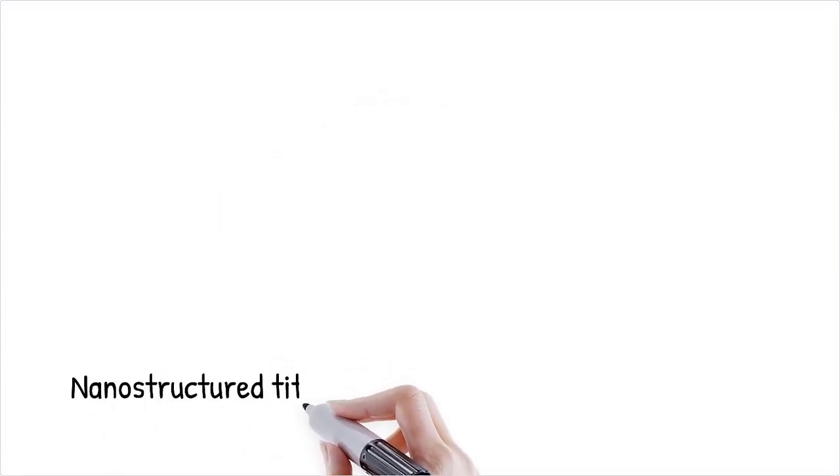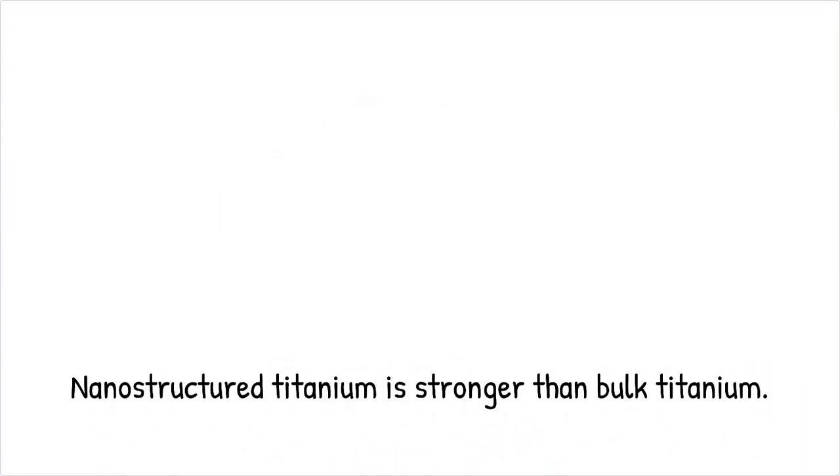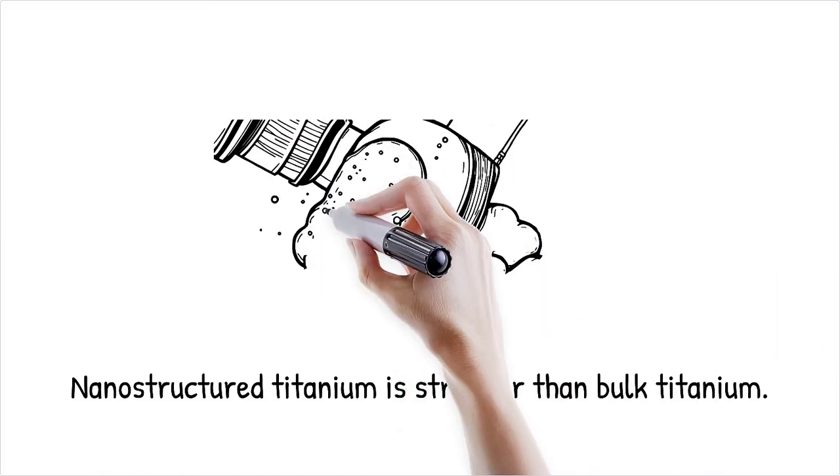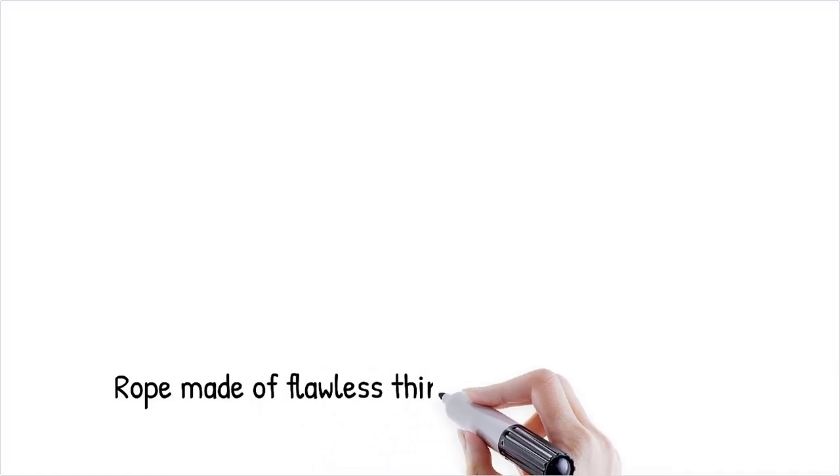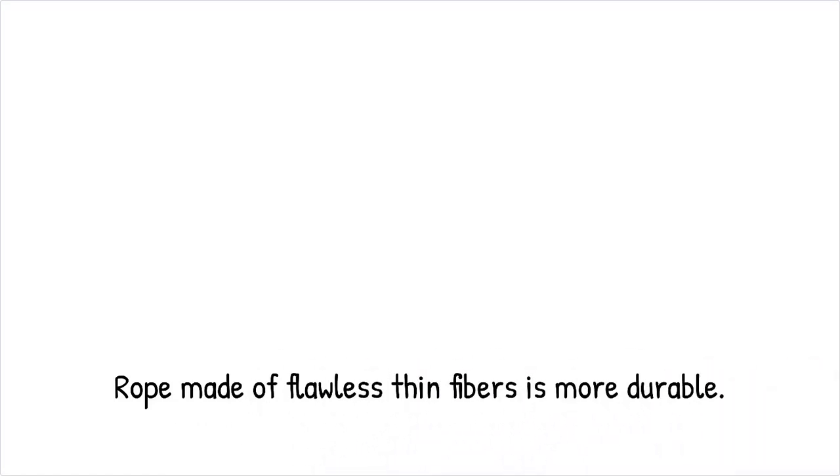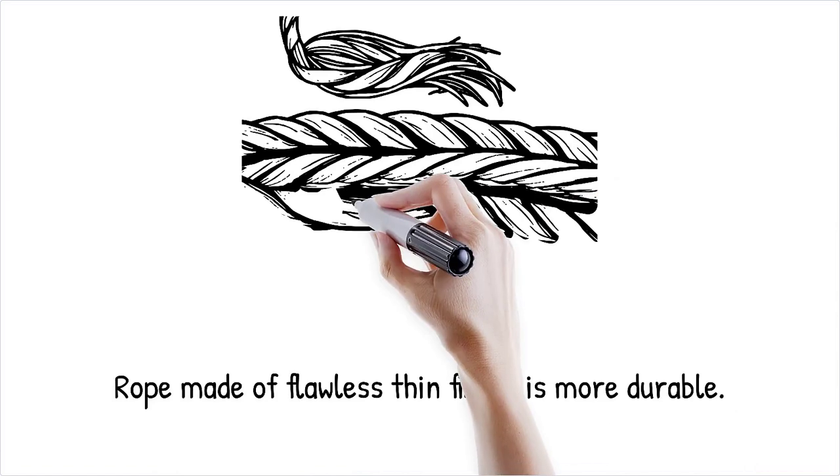Nanocrystalline metals such as nanostructured titanium exhibit higher strength and hardness compared to their bulk counterparts. It's like making a rope from many thin, flawless fibers, increasing its durability compared to a single thick strand with defects.